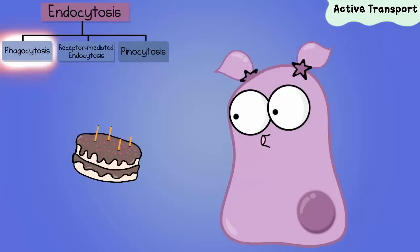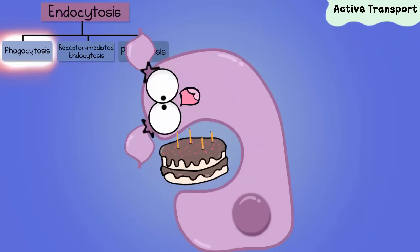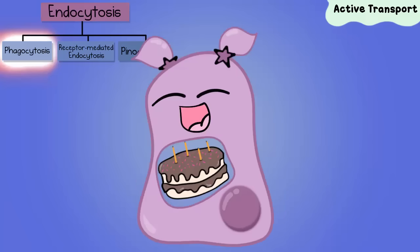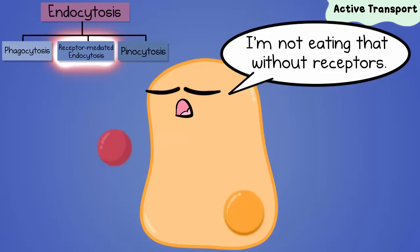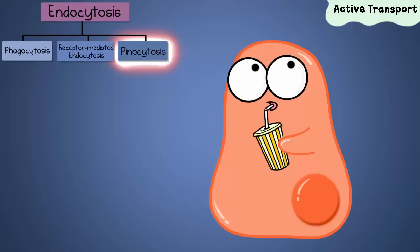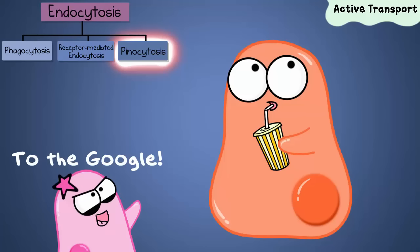Amoebas, for example, rely on a form of endocytosis where pseudopods stretch out around what they are going to engulf and then pull it into a vacuole. There are other forms too, such as the fancy receptor-mediated endocytosis, where cells can be very picky on what's coming in because the incoming substances actually have to bind to receptors to even get in. Or pinocytosis, which allows cells to take in fluids. Search to find out more details about the different types of endocytosis.